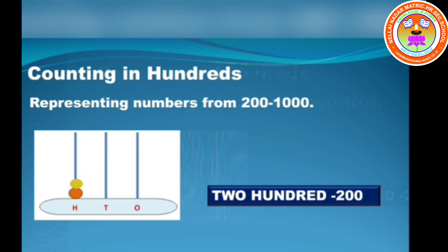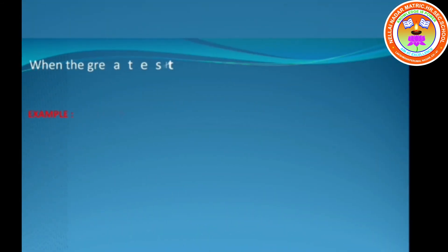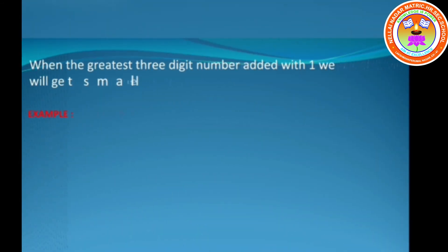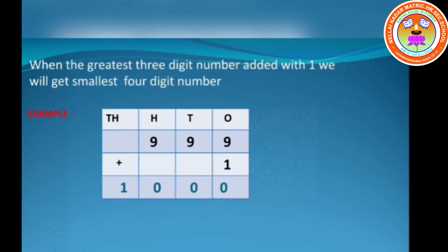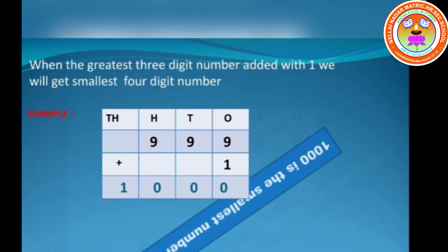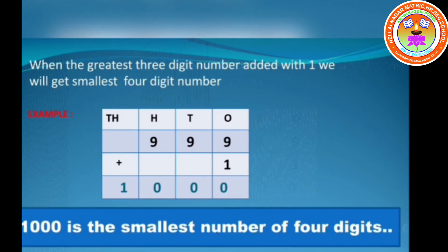When the greatest 3-digit number is added with 1, we get the smallest 4-digit number — it is 1000. The number name for 1000 is one thousand. 1000 is the smallest 4-digit number.